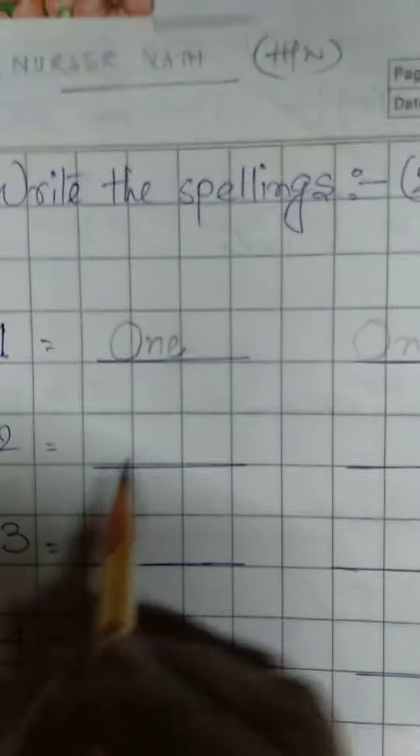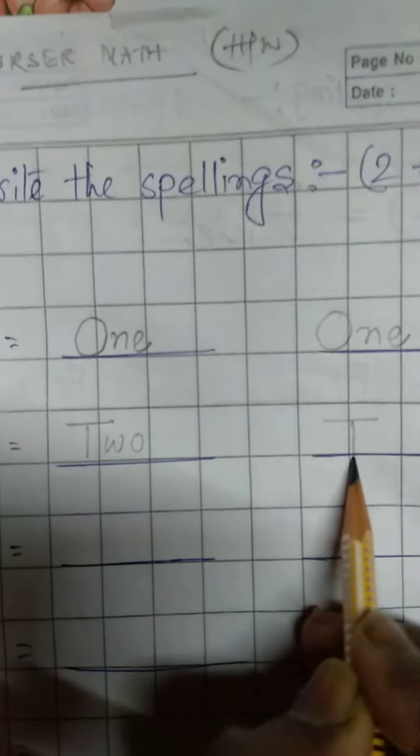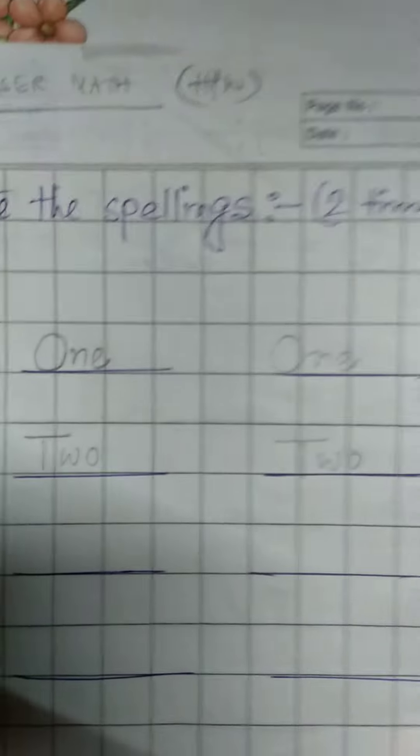Now, next this is number 2. You have to write the spelling of 2: T-W-O and T-W-O.